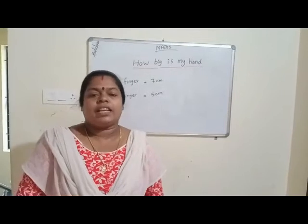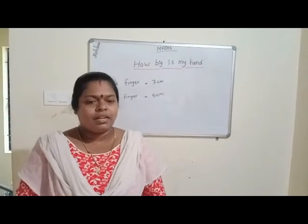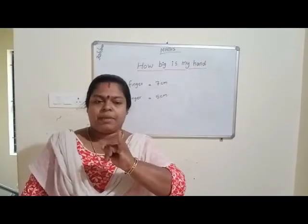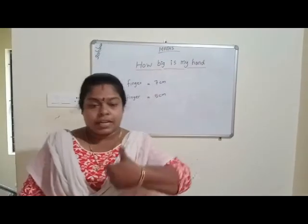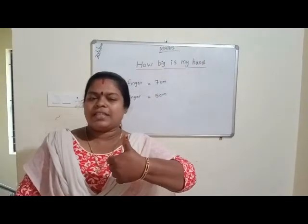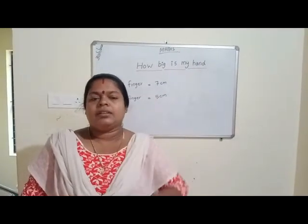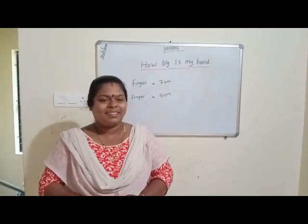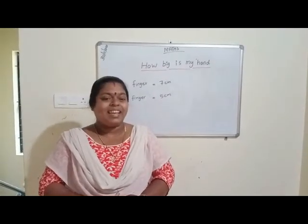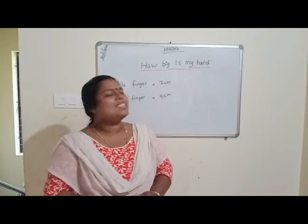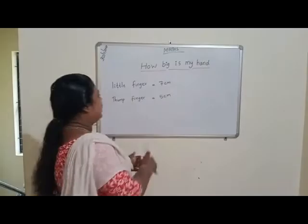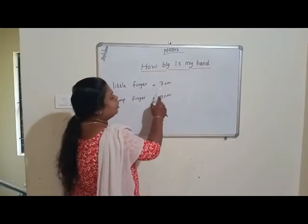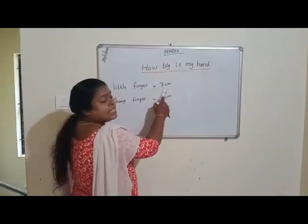Which finger is the longer one? Students, little finger is 7 cm and thumb finger is 5 cm. So which finger is the longer one? That is the little finger — it is the longer one. Little finger is 7 cm, so this finger is the longer one.